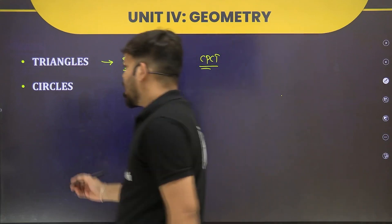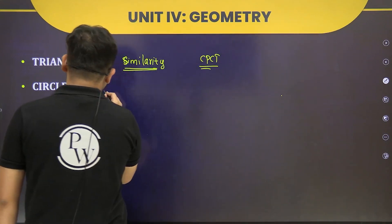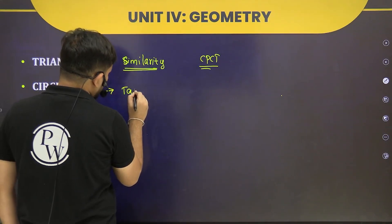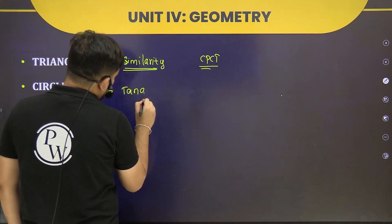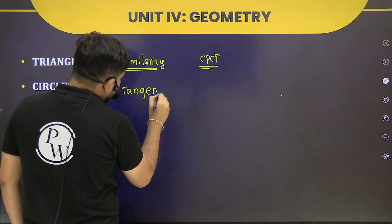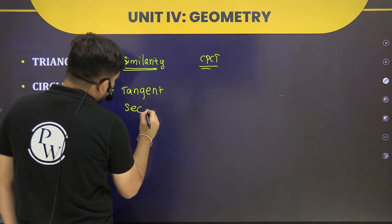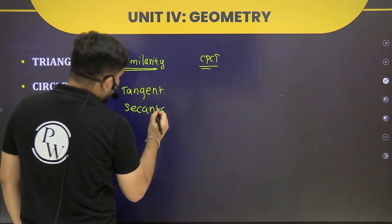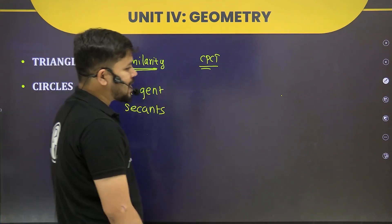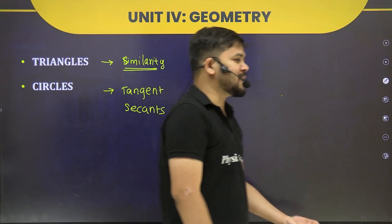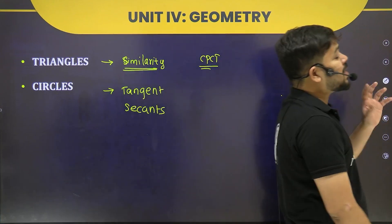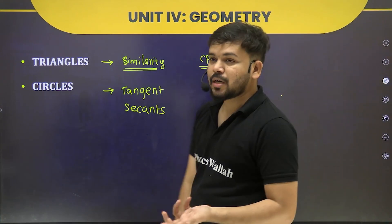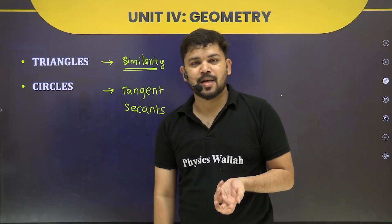Next is Circles. We will see what tangent means, what secant means, how many tangents are possible when a point is inside the circle versus outside the circle. There are also theorems related to these concepts, and we will see what those theorems state.